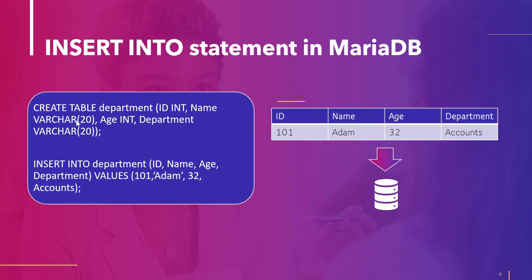Here we can see an example where we are using the CREATE TABLE statement to create a table with the name 'department'. The columns defined are id of integer data type, name, age, and department. After this we are using the INSERT INTO statement where we have specified 'department' as our table name, then the column names id, name, age, and department, then the VALUES keyword with corresponding values: 101 as the id, Adam as the name, 32 as the age, and accounts as the department name. Once we execute this statement, a table with one row will be created within our database.